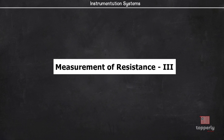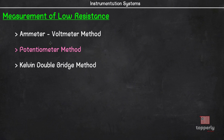Hey everyone, welcome back to Instrumentation Systems. In the previous videos we have seen that mainly 3 methods are used for measurement of low resistances. Of these, we have already covered the ammeter voltmeter method in the last video. In this one we will study the potentiometer method for measurement of low resistances.